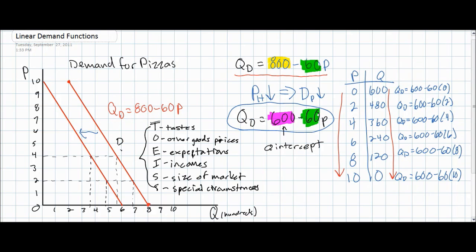If any of these non-price determinants of demand change, we would expect the demand curve to shift. Therefore, these are sometimes called demand shifters. Of course, on a demand function, a change in one of these non-price variables will lead to a change in the A variable.